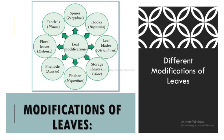A summary of the different modifications of leaves: the first modification is tendrils (example: Pisum); next is spines (example: Zizyphus); next is hooks (example: Bignonia); next is leaf bladder (example: Utricularia); next is storage leaves (example: Aloe); next is pitcher (example: Nepenthes); next is phyllode (example: Acacia); and next is floral leaves (example: Dianthus). These are all the modifications of the leaves as shown in the figure.